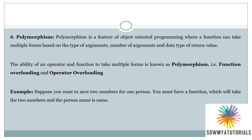Next is polymorphism. Poly means many, and morphism means different forms. Polymorphism means the ability to take multiple forms. It is a feature of object oriented programming where a function can take multiple forms based on the type of arguments, number of arguments, and also the data type of the return values. There are two types of polymorphism: function overloading and operator overloading.